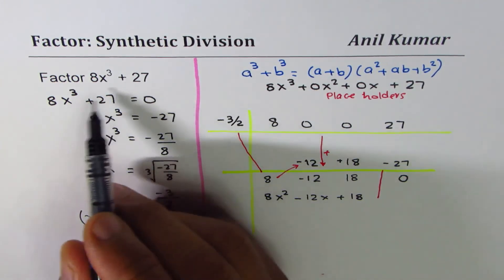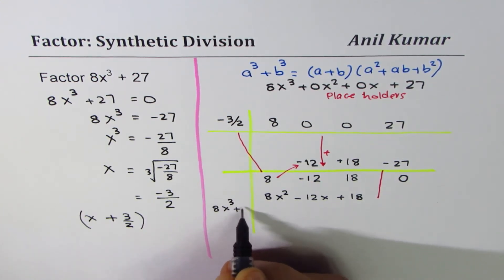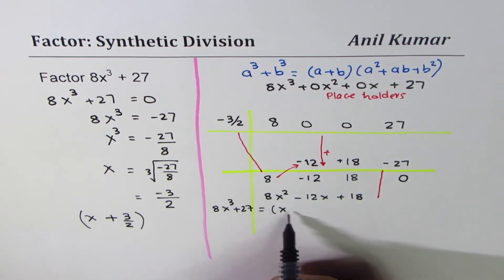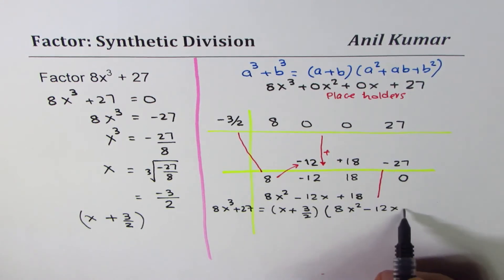Let's rewrite the factors of 8x³ + 27. We have 8x³ + 27 = (x + 3/2) times (8x² - 12x + 18).